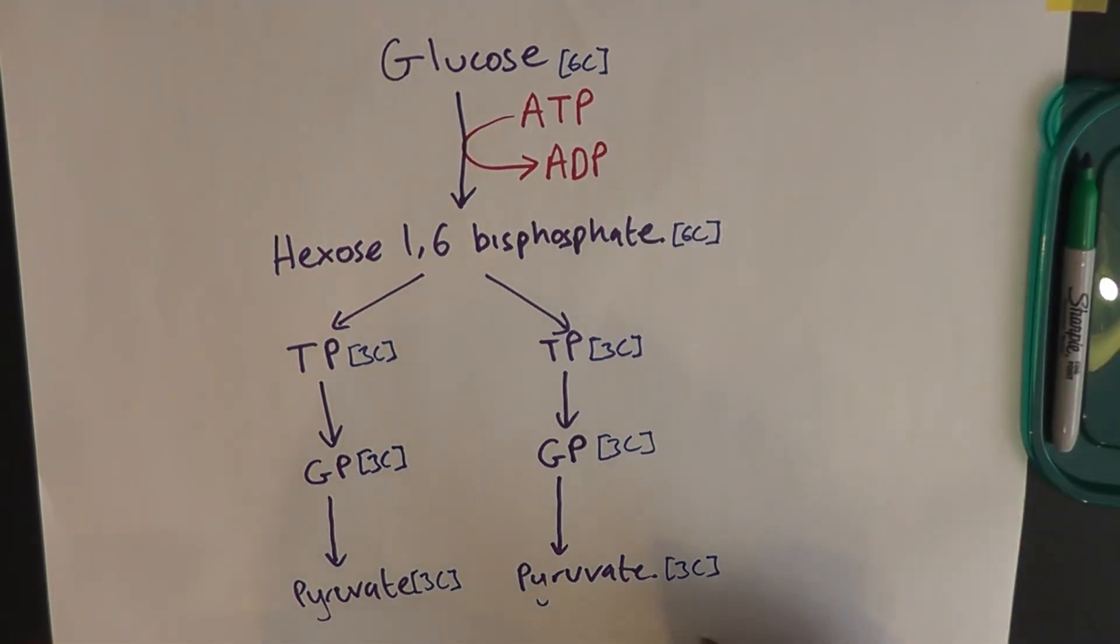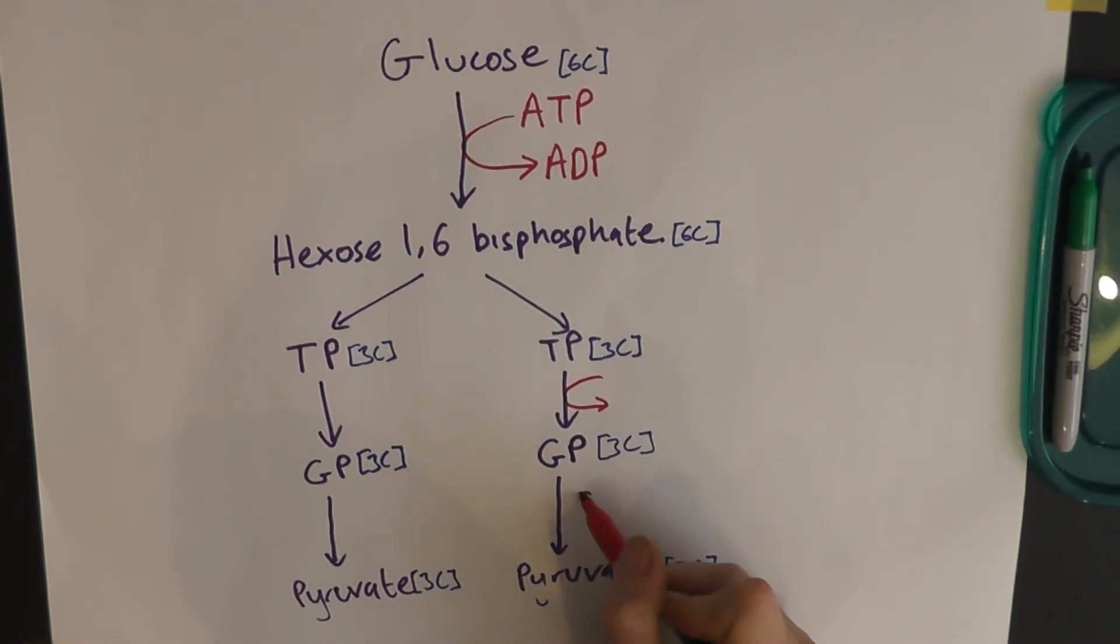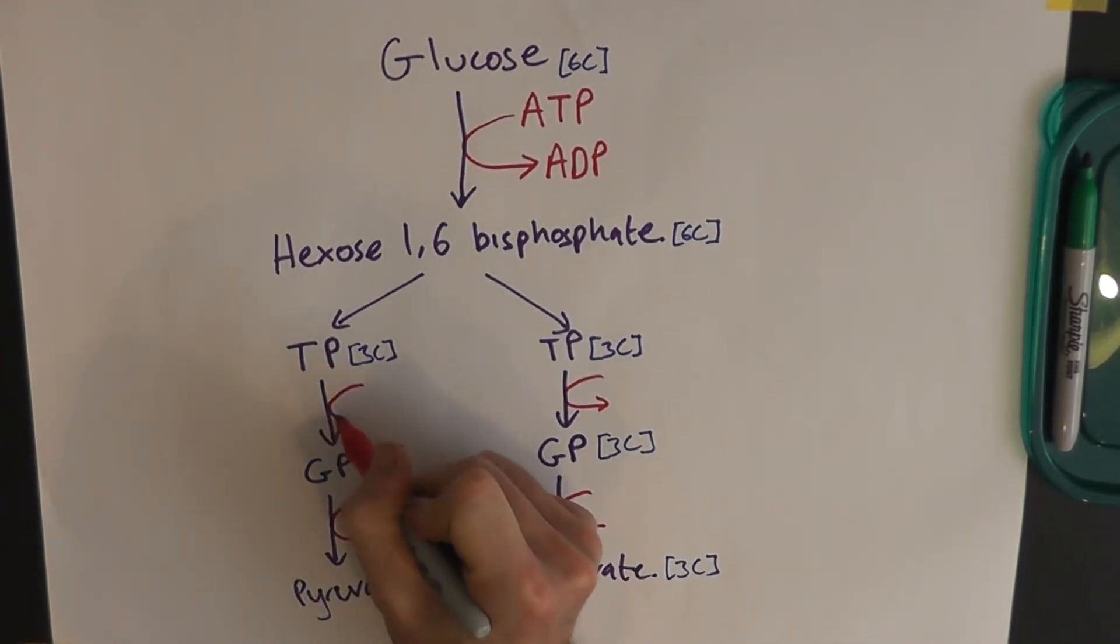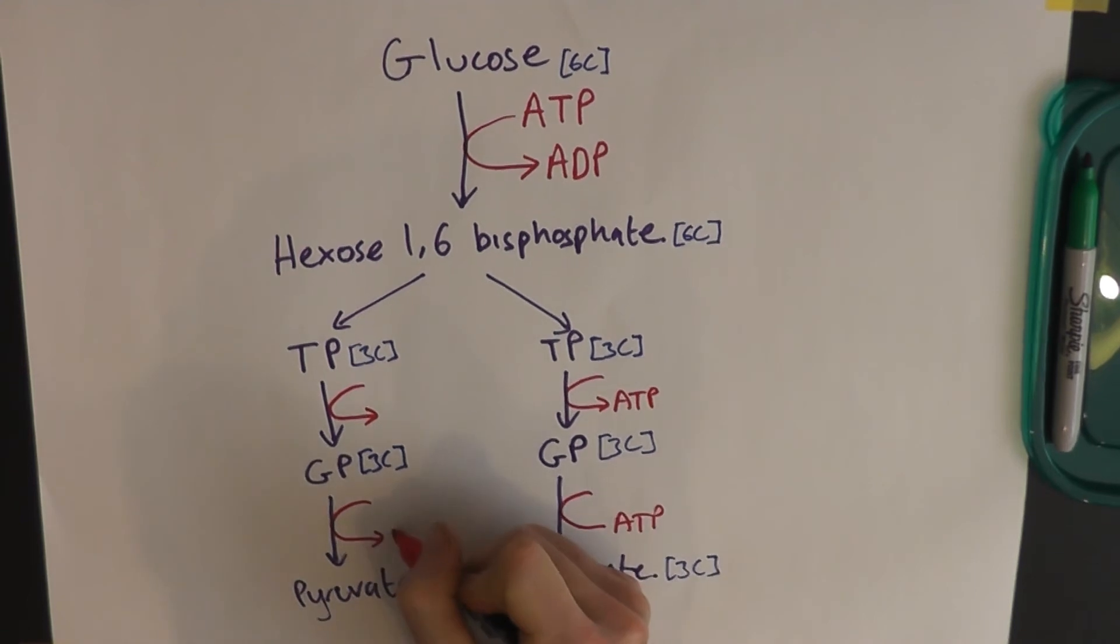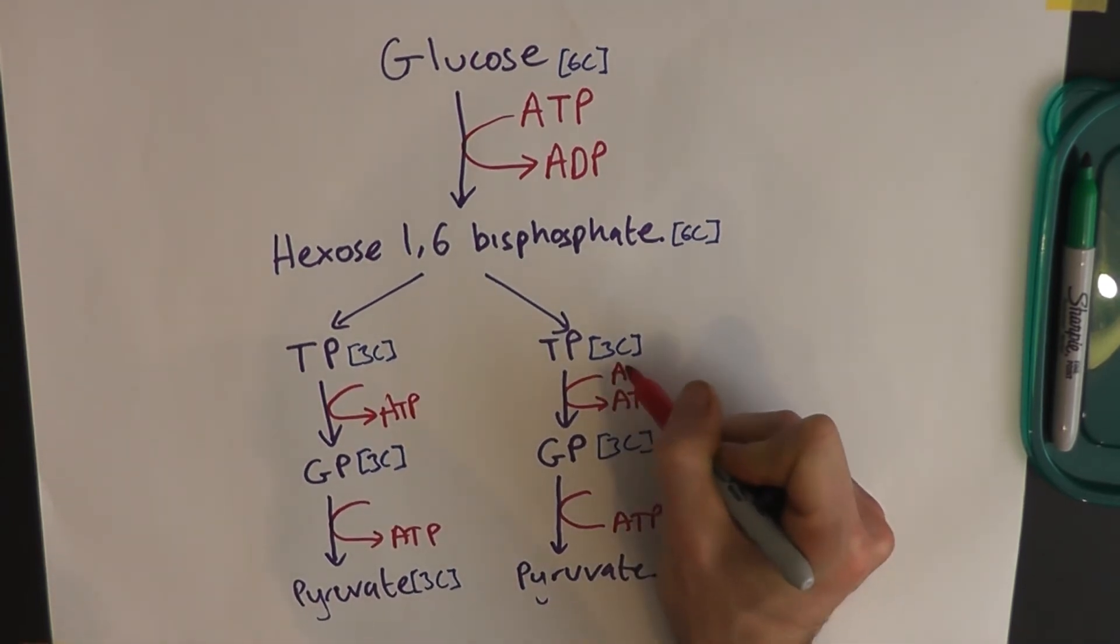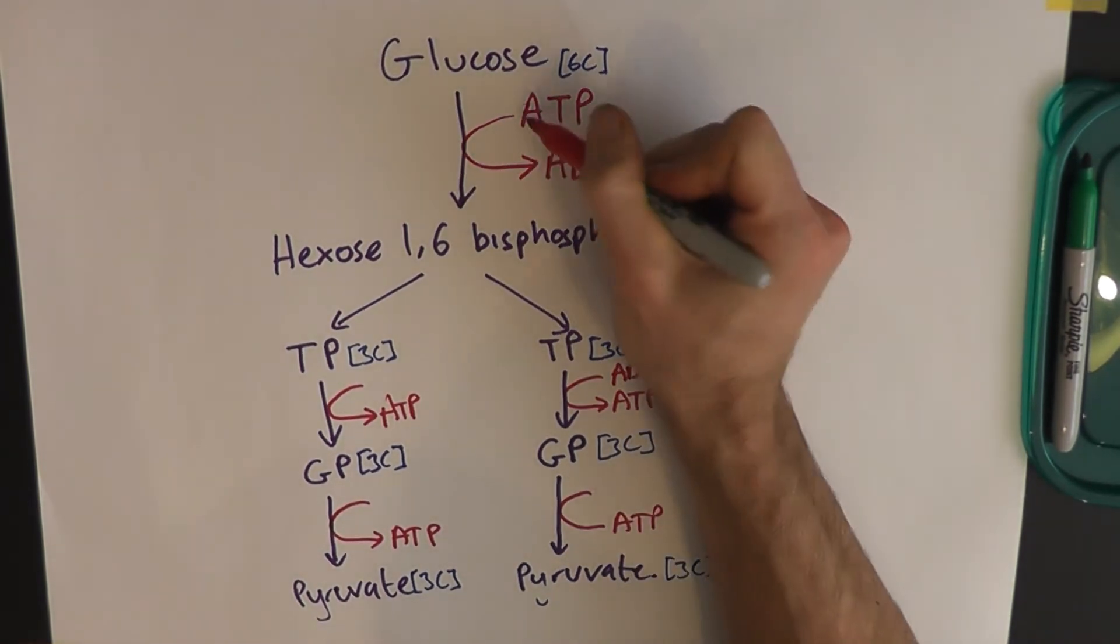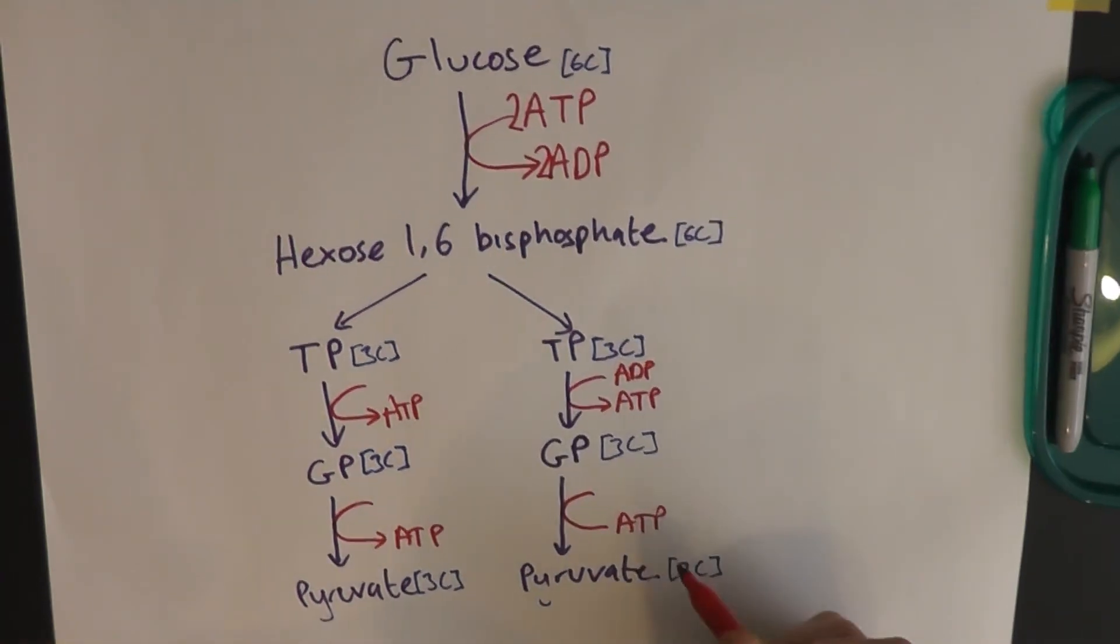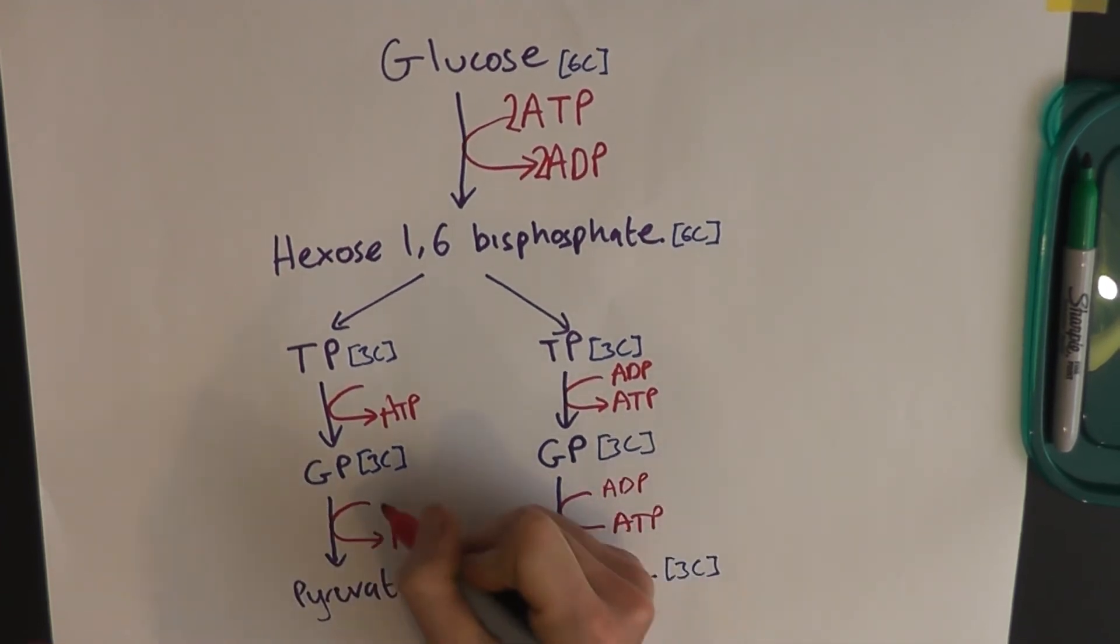Because although we had to put some ATP in at the start, we're going to get some out in this bottom phase. And we get out one, two, three, four molecules of ATP. And you don't have to be particularly good at maths to be able to know that that is a net gain of two ATP because we put two ATP in at the start to get our bisphosphate molecule. And we get four ATP out in this second phase.